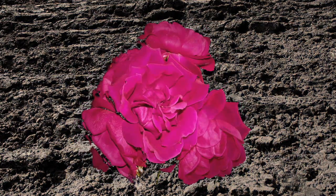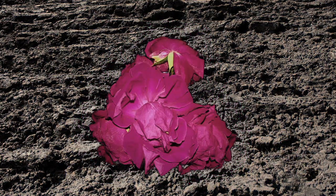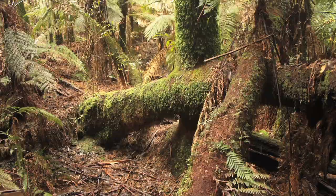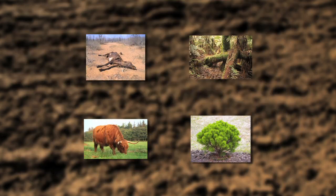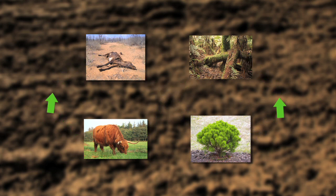If there were no nutrients in the soil, plants would not be able to grow. Soil formation is a continuous process, but it takes time for these parts to interact and form soil. Now that you've learned how soil is formed, let's go over a few content statements.